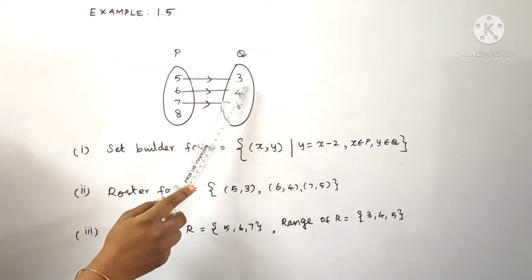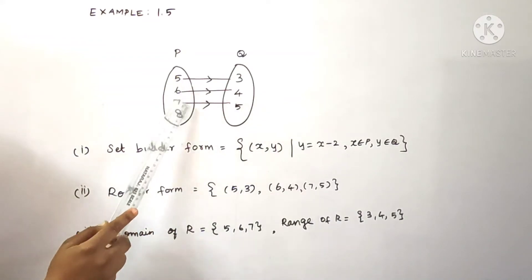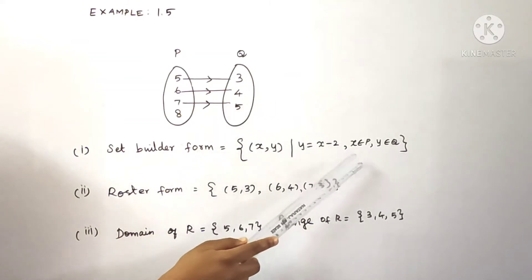Y is equal to x minus 2. X will be P. Y will be Q. So x will be P, y will be Q. This is set builder form.